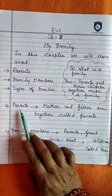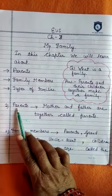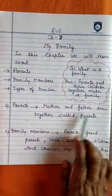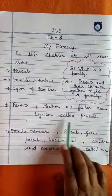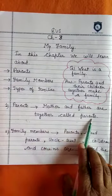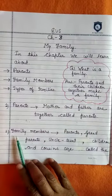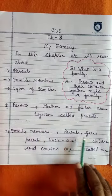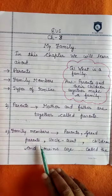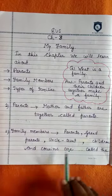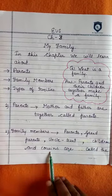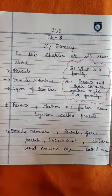The first point is parents. Mother and father are together called parents. The second point is family members. Parents, grandparents, uncle, aunt, children, and cousins are called the family members.